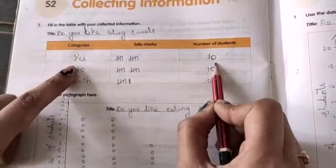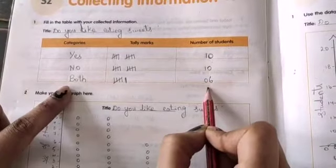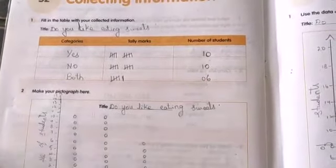So here, yes how many children? 10. No, 10. And both, how many? There are 6. So now, what we have to do - with this information, we have to make a bar graph.